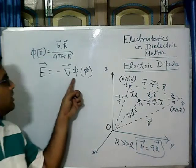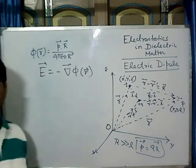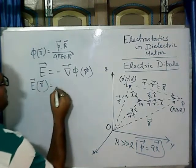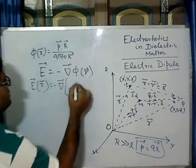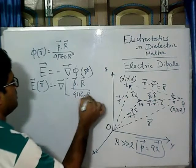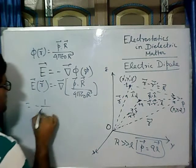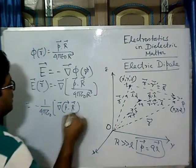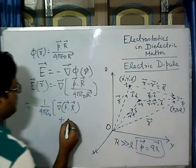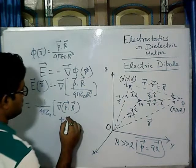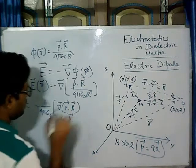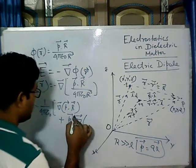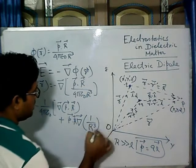So what is this gradient of phi? There will be a minus sign — we know this. Now here, if we operate this on this form, it will be minus 1 by 4π epsilon naught, gradient of P vector dot R, plus P dot gradient of 1 by R squared.